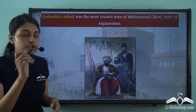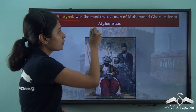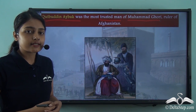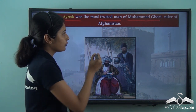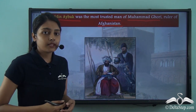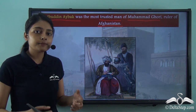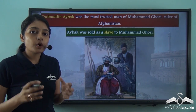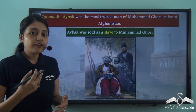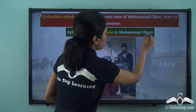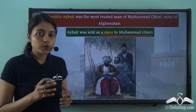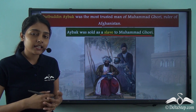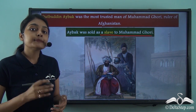Qutubuddin Aibak was the most trusted man of Muhammad Ghuri. Muhammad Ghuri was the ruler of Afghanistan, and it is from Afghanistan that he came to invade Delhi. Qutubuddin Aibak was born to a Turkish family, after which he was sold as a slave to Muhammad Ghuri. So Qutubuddin Aibak was a slave of Muhammad Ghuri, and over time this slave became his most trusted man.